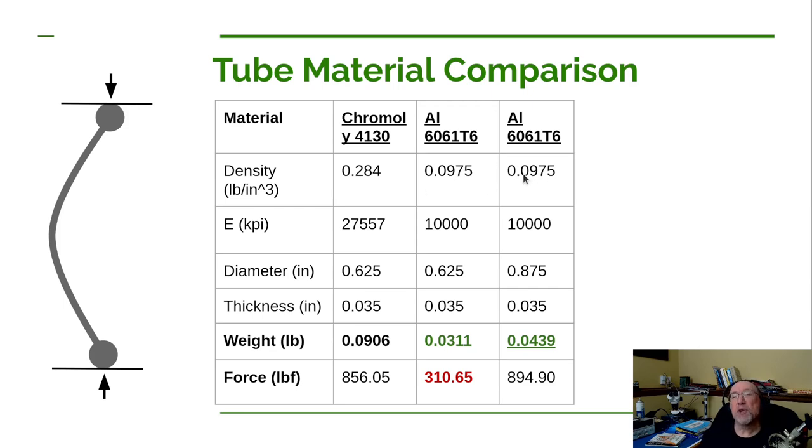I'm going to still use the large diameter steel tubing that we just looked at. So this column will be identical to the one we just looked at. Let's look at an aluminum tube that has the same dimensions. So it's going to have the same outer diameter and same thickness. And so that'll be a direct one-to-one comparison of what the material itself will do.